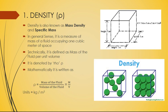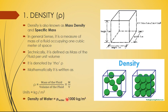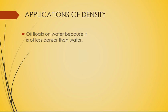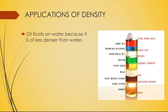The units of density are kg per meter cube. Looking at the diagram, two cubes are shown: one with loosely packed molecules and another with closely packed molecules — the latter is clearly denser. The most important value to remember is the density of water, which is 1000 kg per meter cube or 1 gram per cc. An application of density: oil floats on water because oil has less density than water.